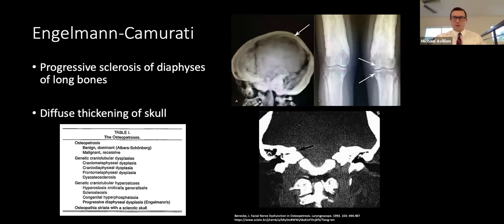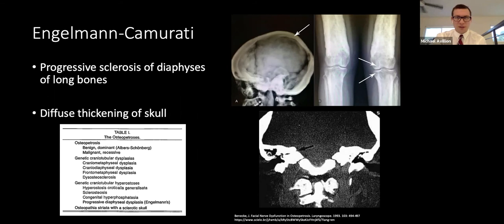One notable subgroup is Engelman-Camurati disease, which has findings similar to osteopetrosis as well as progressive sclerosis of the diaphysis of long bones with preservation of cortical thickness at the epiphysis. Shown here is a 57-year-old male with recurrent Bell's palsy and facial spasm who underwent middle cranial fossa decompression, leading to resolution of facial spasm and paralysis for at least one year.